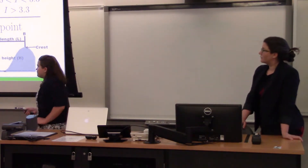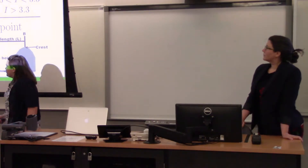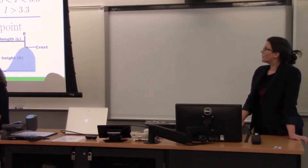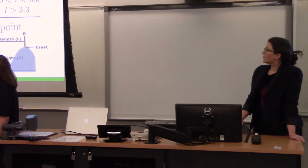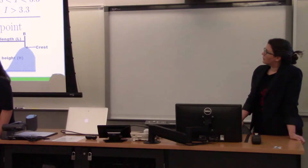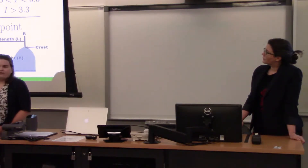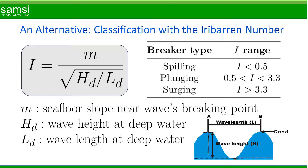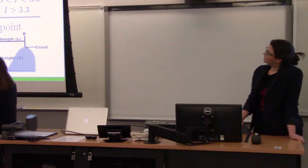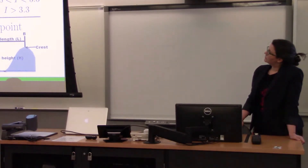The Iribarren number takes in a few parameters: the seafloor slope near the wave's breaking point, the wave height in deep water, and the wave length in deep water. If you compute the Iribarren number, you get a value out, and using this value you can determine whether we have spilling, plunging, or surging wave types.